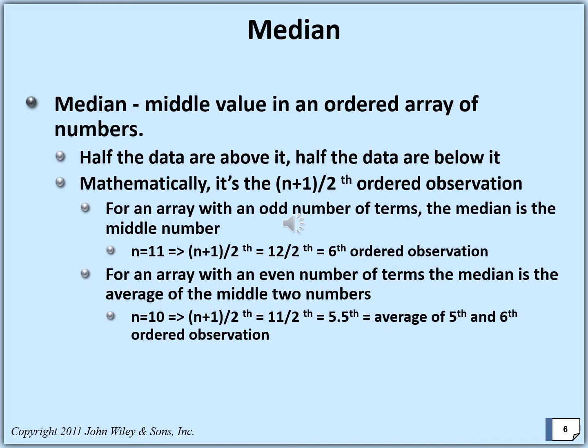The second measure is the median — the middle value in an ordered array of numbers, or ordering data. By definition, the median divides the data set into two halves: one half above its value, the other half below it. In mathematical terms, its position is n plus 1 divided by 2, its position among the ranked or ordered data.